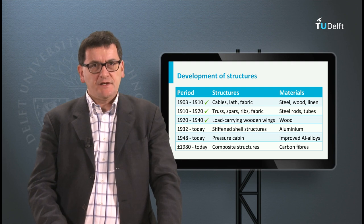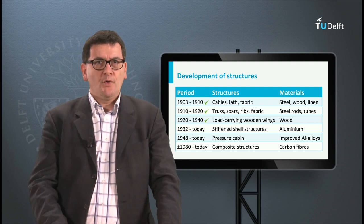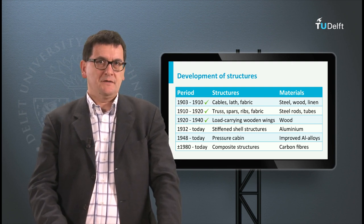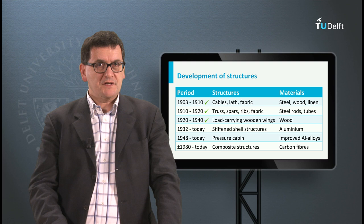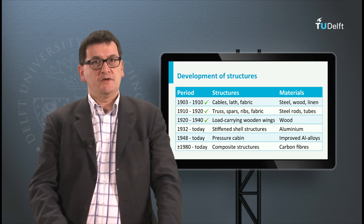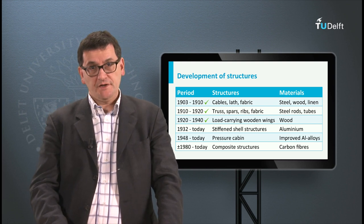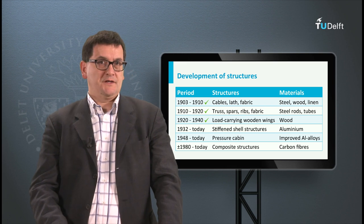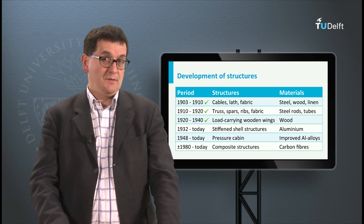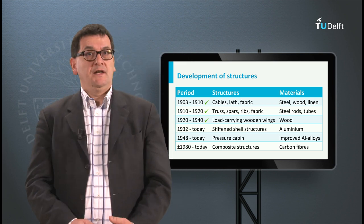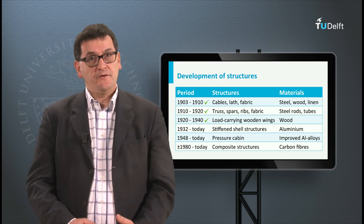After the 1970s, the importance of composites increased — first as material for secondary structures, but today as material for primary structures like wings and fuselages, as we see in the Boeing 787 and the Airbus A350.